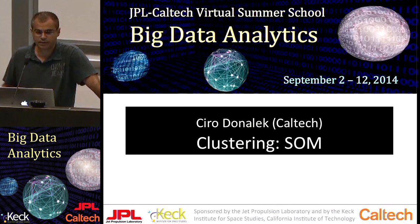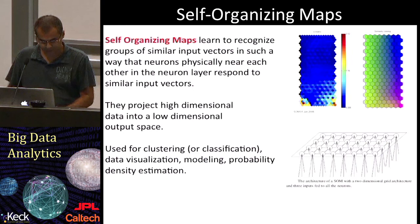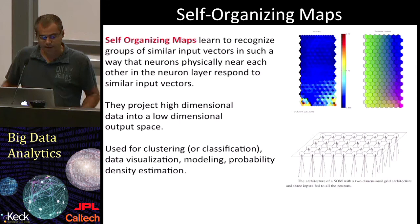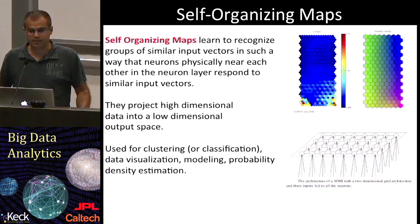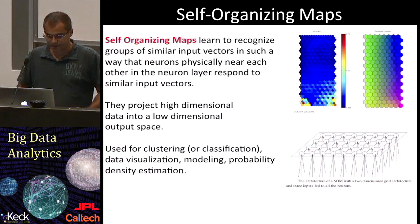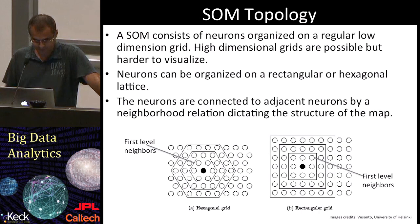Self-organizing maps are also called Kohonen maps, from the name of the Finnish professor Teuvo Kohonen, who can be considered the father of this model. They learn to recognize groups of similar input vectors such that neurons physically near each other respond to similar input vectors. Basically, they map points from a high-dimensional input space to a 2D or 3D target space, preserving as much as possible the distance and proximity relationships. Self-organizing maps are widely used in data analysis, especially for clustering, data visualization, model estimation, and probability density estimation.